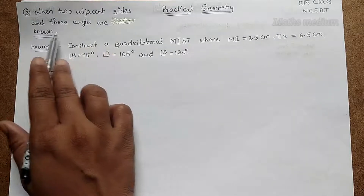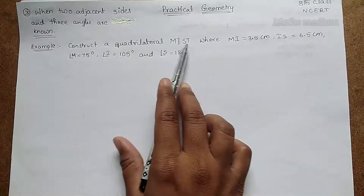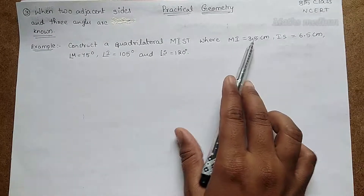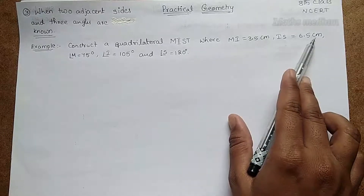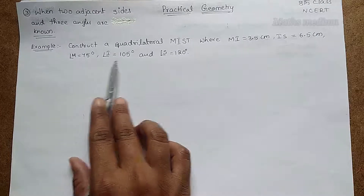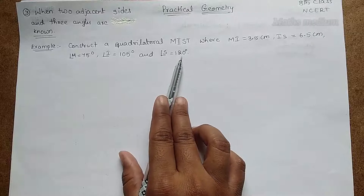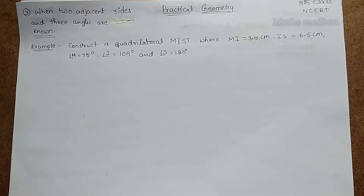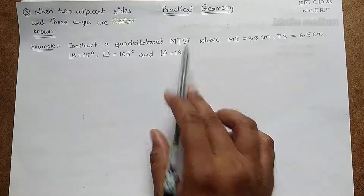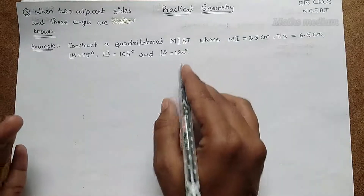Let's start the example. Construct a quadrilateral MIST where MI is equal to 3.5 centimeters, IS is equal to 6.5 centimeters, angle M is equal to 75 degrees, angle I is equal to 105 degrees, and angle S is equal to 120 degrees. These are the given parameters of the quadrilateral MIST, and we have to construct it.